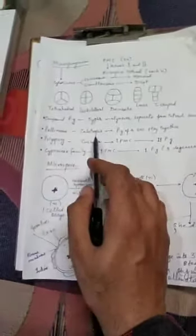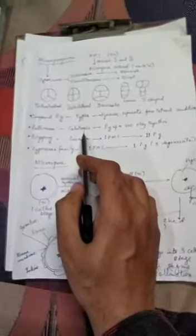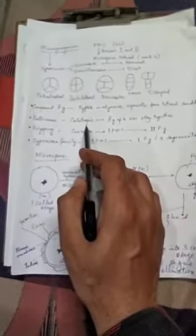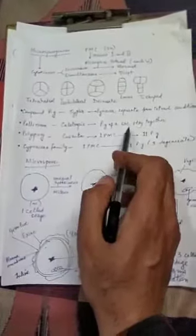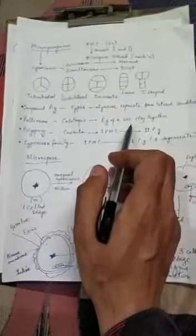Now pollinium. Pollinium is found in Calotropis, also found in the Orchidaceae family or orchids, in which the pollen grains of a sac stay together. So all the pollen grains of an anther sac are together.